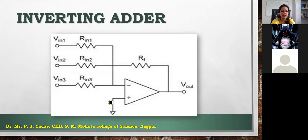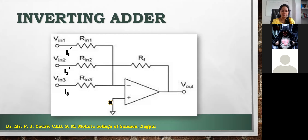This is what the inverting adder looks like. We have three inputs: VIN1, VIN2, and VIN3, given to the inverting end through three resistors — that's why it is an inverting adder. At the output we have connected a feedback resistor which feeds back the output to the input, and the non-inverting end is grounded. These are the three different currents flowing from the three inputs: I1, I2, and I3. The final currents are IB2 at one end and IF, the feedback current, at the other.